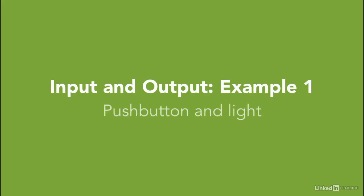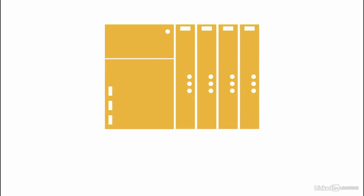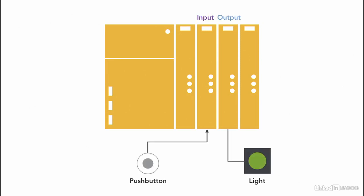Let's take an example that demonstrates how the input instructions XIC and XIO, and output instruction work. In this simple example, we have a normally open push button that's connected to a light using a PLC.